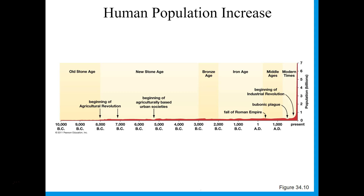Despite that fact, human population increase is still massive. You can see it was pretty low for thousands and thousands of years until we get to the industrial revolution. Based on the last section, what kind of growth would you call this? This is exponential population growth — very exponential population growth — and it is frankly probably not sustainable.